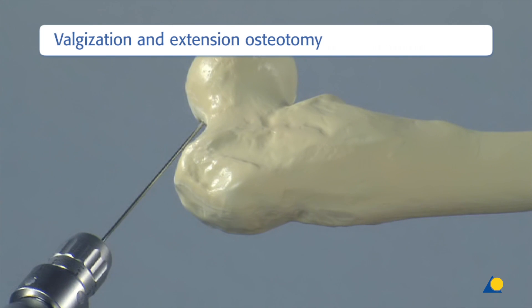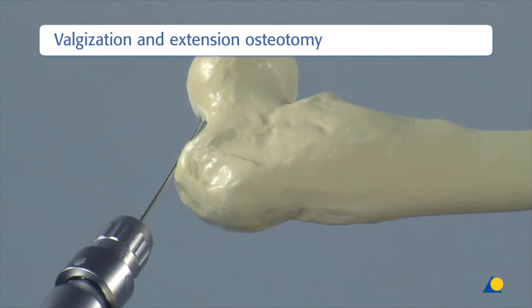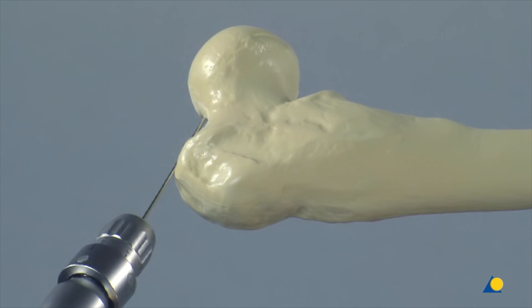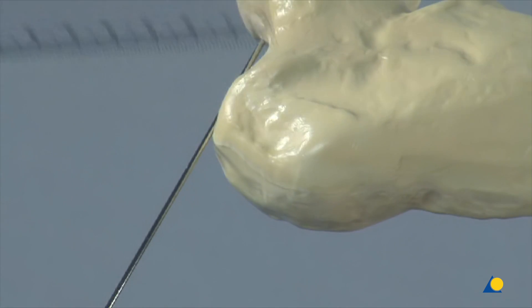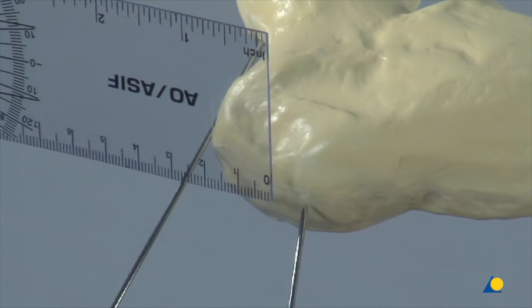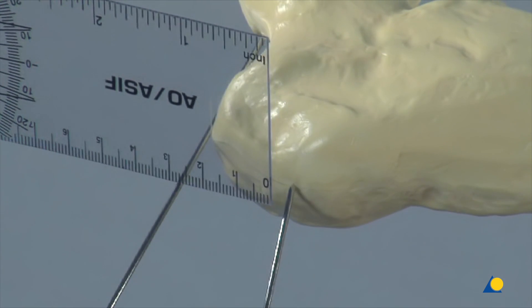A K-wire is inserted just below the tip of the greater trochanter aiming into the centre of the femoral head. In the axial view, the window for the seating chisel in the centre of the femoral neck is determined. The window is located approximately 3.5 centimetres below the tip of the greater trochanter.